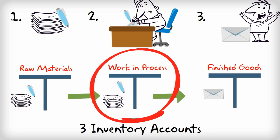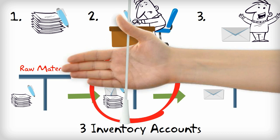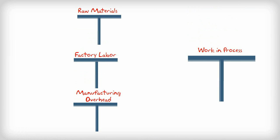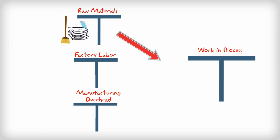I want you to concentrate on the work in process account. In order to start producing the envelope, we need the paper and the glue — these are the materials that are directly included in the production, and we call them direct materials. We will also need these two workers to fold the paper and apply the glue correctly; they are directly involved in the production and therefore we call them direct labor.